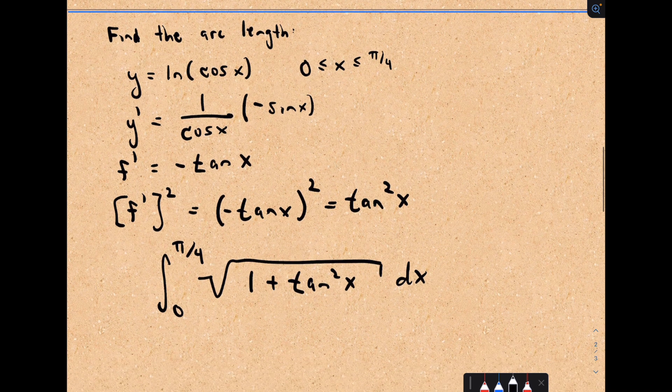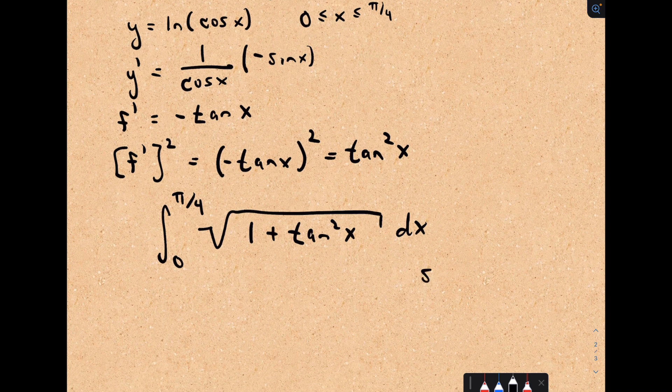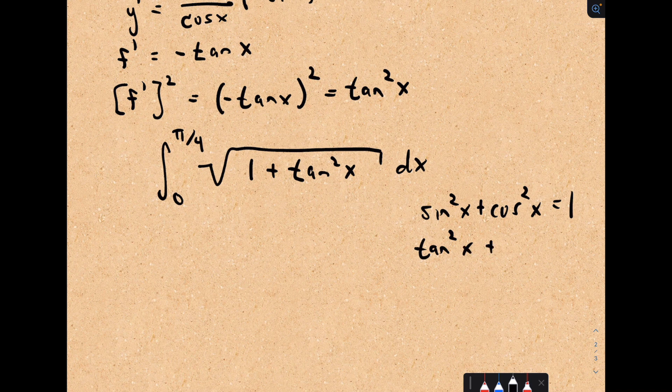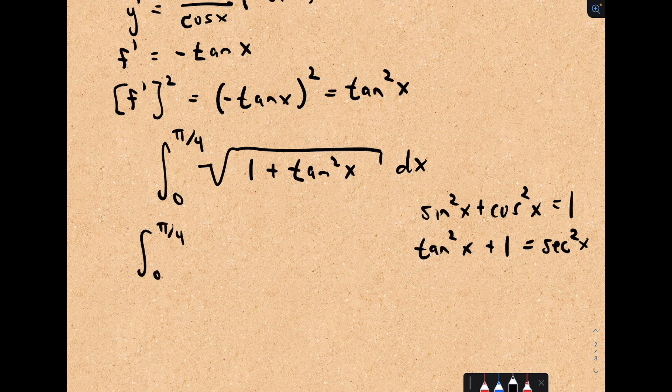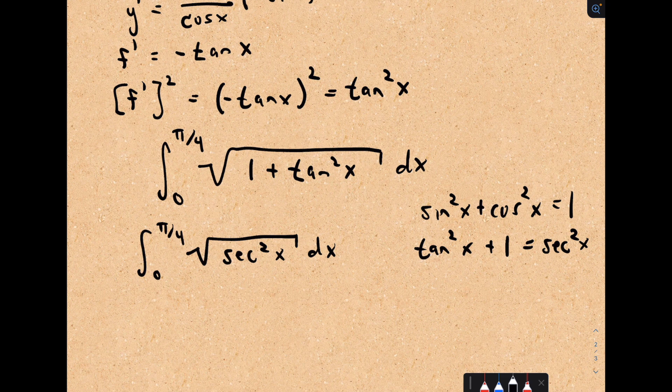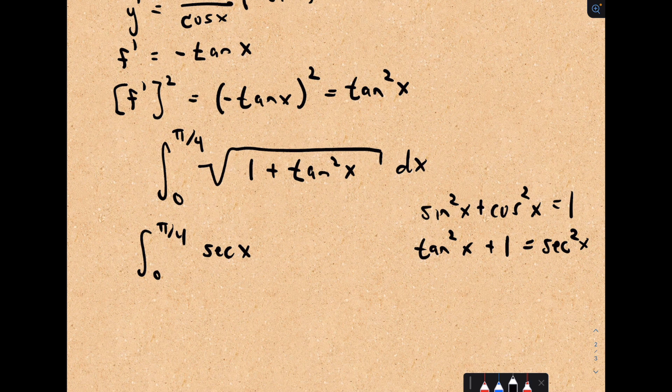Now I'm thinking, what do I do with this thing? Well, you may recall the identity. Sine squared plus cosine squared equals 1. If we divide everything by cosine squared, we get tangent squared plus 1 equals secant squared of x. I can actually replace my 1 plus tangent squared with secant squared of x. But if I take the square root of secant squared, I can just write that as secant of x. I can use just secant of x because secant will be positive over this interval from 0 to pi over 4.